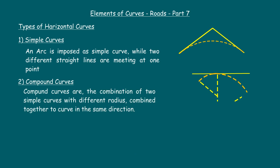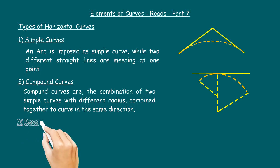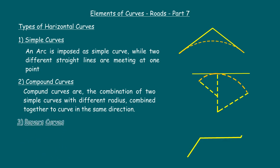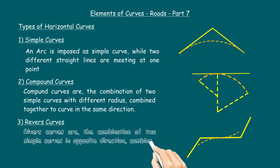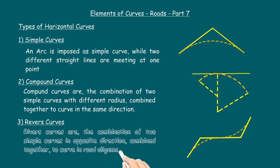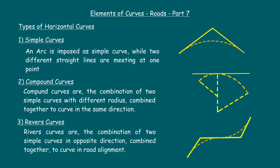Three: reverse curves — reverse curves are the combination of two simple curves in opposite directions combined together to curve in the road alignment.